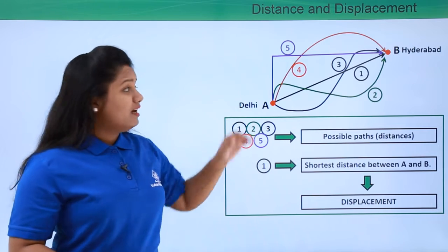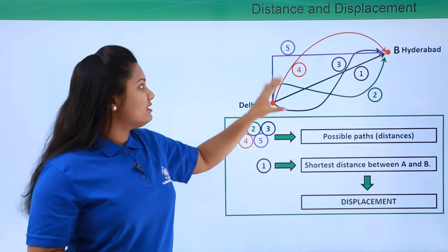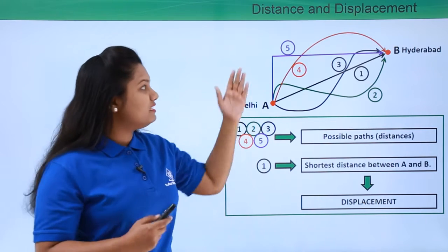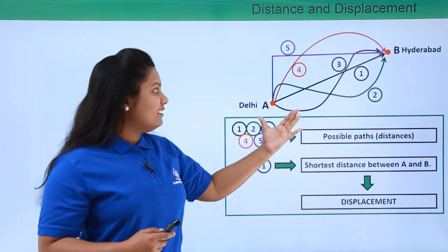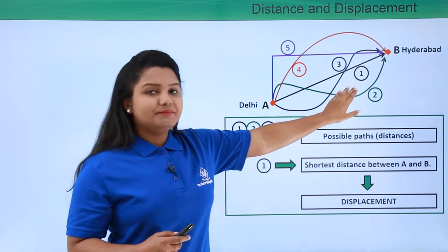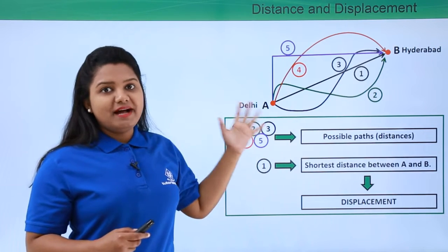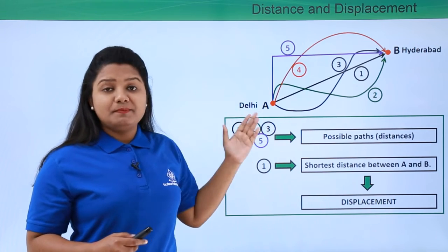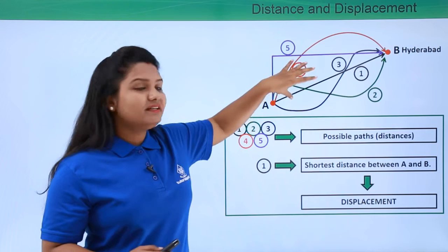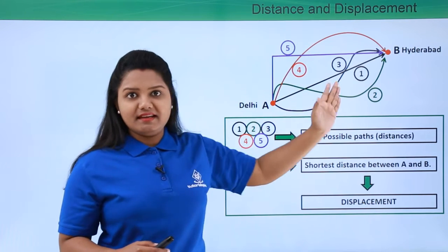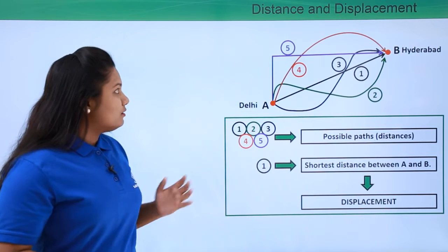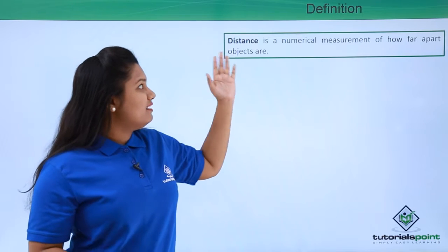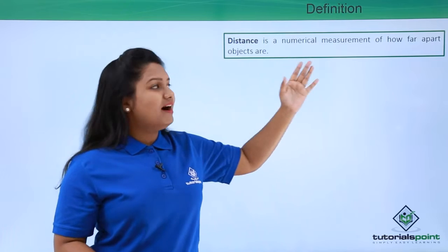Suppose I take path number five to reach Hyderabad — I will travel a distance equal to the length of path number five, but the displacement I have made on reaching Hyderabad is exactly path length one. So whichever path I choose, I'll be traveling a different distance, but the displacement will always equal the shortest distance between points A and B. Now let's define these two terms: distance is a numerical measurement of how far apart objects are.